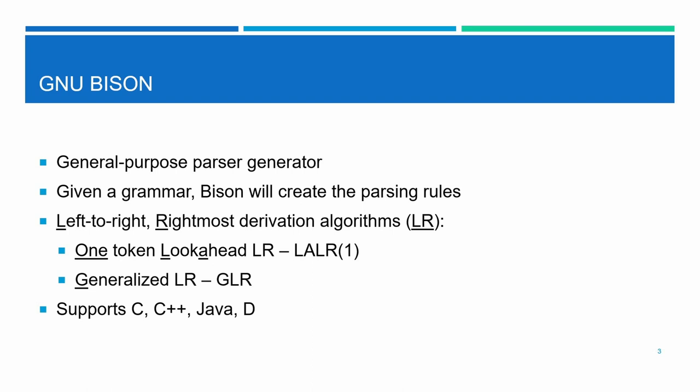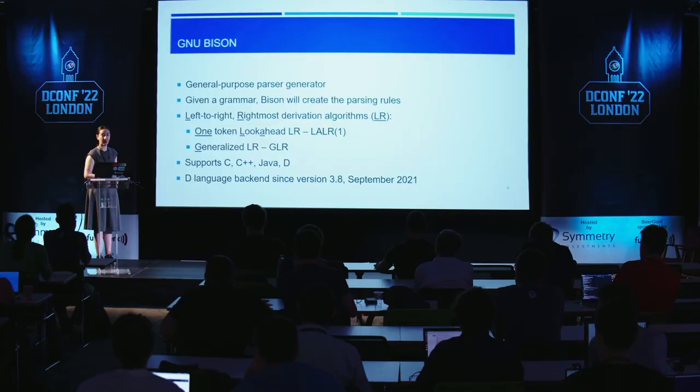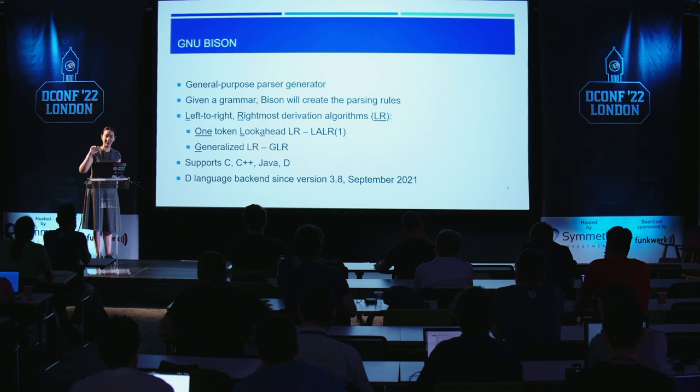Bison supports chronologically the languages C, C++, Java, and most recently D. The D-language backend has been available since last September and since version 3.8. Right now, the D language only supports the LALR(1) algorithm; GLR support will come in time.